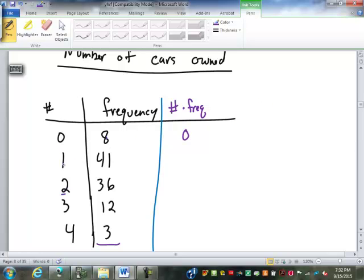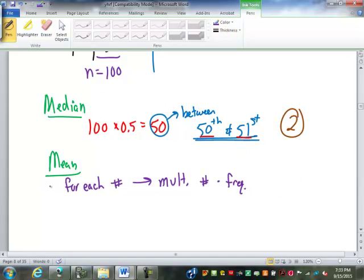I have 41 ones. If I add up 41 ones, I'm going to get 41. 1 times 41 is 41. 2 times 36 is 72. I have 36 twos. If I added up 36 twos, I would have 72. 3 times 12 is 36. Again, 12 threes add up to 36. 4 times 3 is 12. Again, 3 fours add up to 12. So that is the first step in the mean.